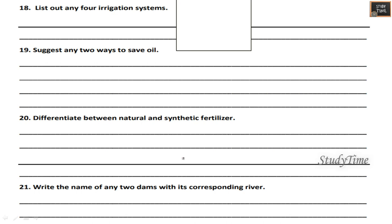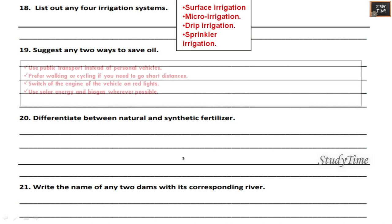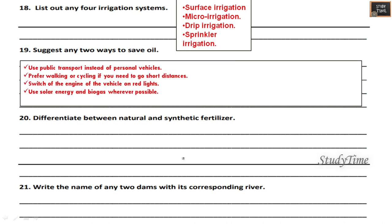List out any four irrigation systems: surface irrigation, micro irrigation, drip irrigation, and sprinkler irrigation. Suggest any two ways to save oil: use public transport; prefer walking or cycling; switch off the engine at red lights when standing at a signal; and use solar energy and biofuel as much as possible.